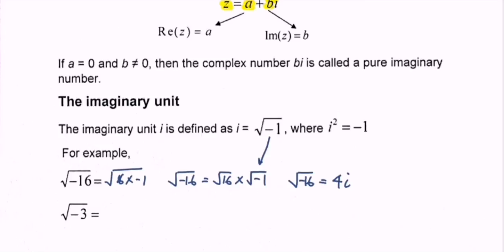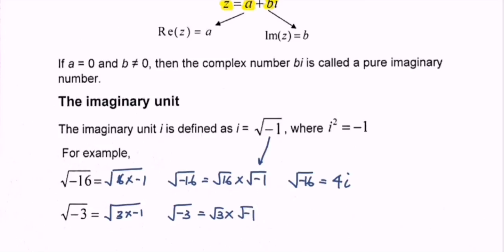Next, we have another example. The square root of negative 3 can be expressed as the square root of 3 multiplied by negative 1. Simplifying, the square root of negative 3 equals the square root of 3 multiplied by the square root of negative 1, which equals the square root of 3 multiplied by i.